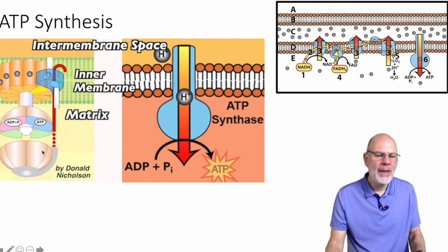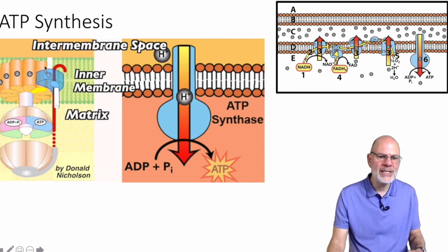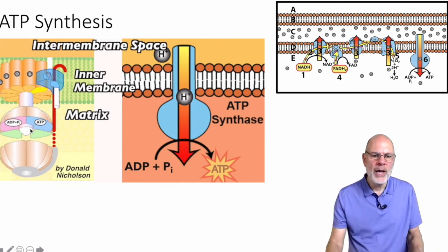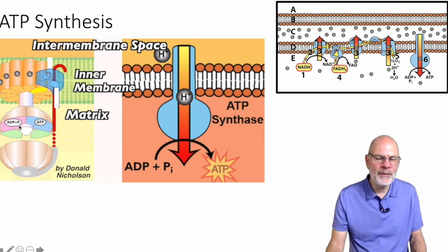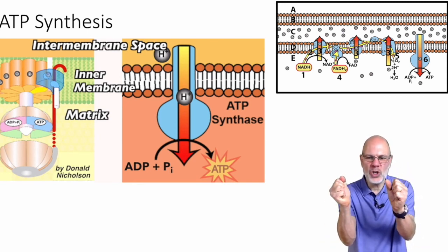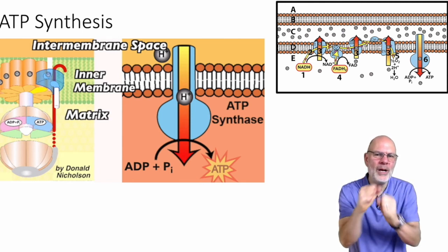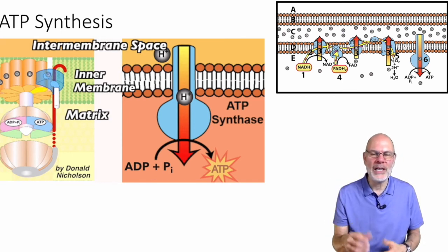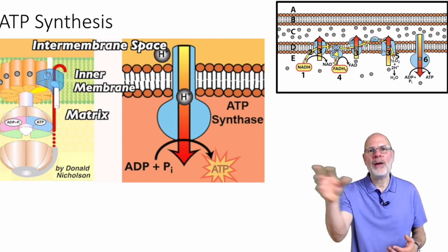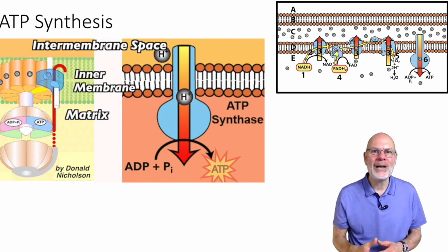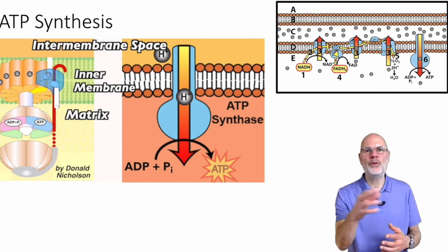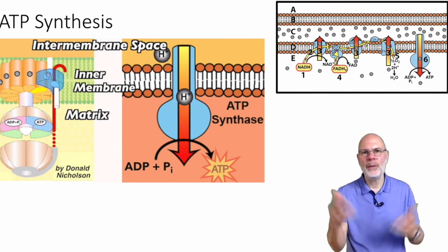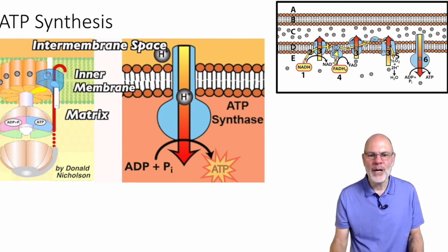ATP synthase allows protons to come through and turns a little rotor. That rotor has binding sites for ADP and phosphate, and every time it turns, it smashes ADP and phosphate together, creating ATP. That energy comes from diffusing protons. We get concentrated protons by flowing electrons, which come from oxidizing food to make NADH and FADH2. That food ultimately came from plants, and plants got that energy from sunlight — that's driving the whole system.